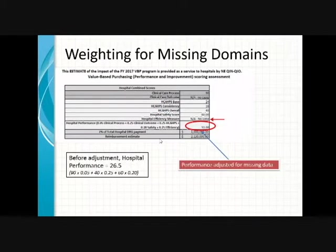Finally, I just want to highlight an aspect of the tool that is helpful and reflects the intent of the VBP program. In the cases where you have insufficient cases to be eligible for a domain, the weighting of that domain gets redistributed among the remaining domains. As long as you have enough domains reporting, you can still get a performance score and it is not adversely affected by a missing domain score. In this example, the hospital performance before reweighting would have been only 26.5%. After redistribution of the missing weights, it jumps to 53%.